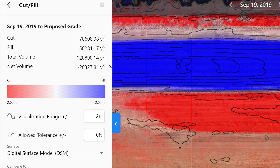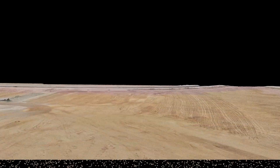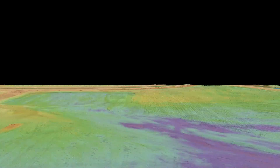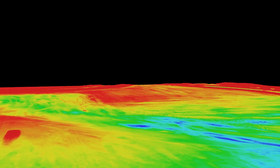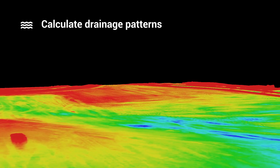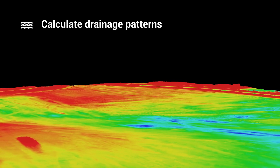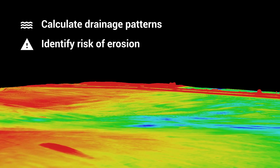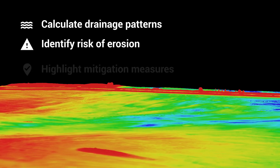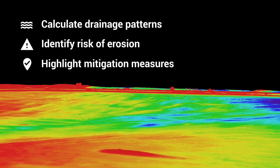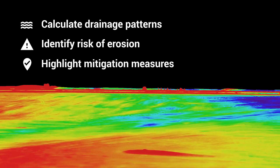In addition to topographic maps, DroneDeploy also enables developers to generate data crucial for hydrology studies. Export data to calculate drainage patterns and flow rates of stormwater runoff, identify the risks of erosion and flooding, and highlight potential mitigation measures.